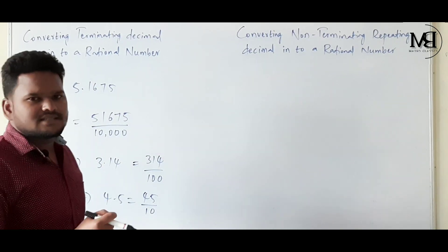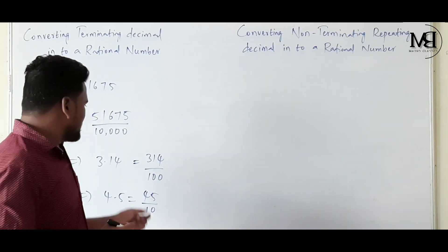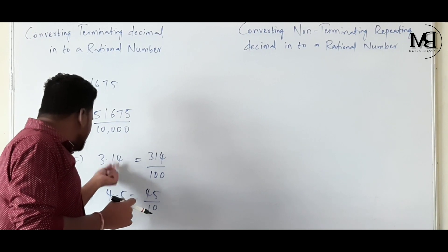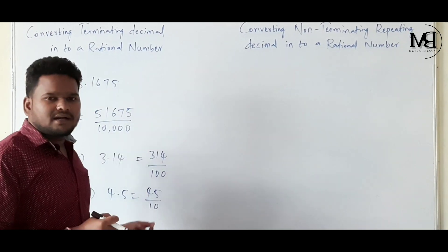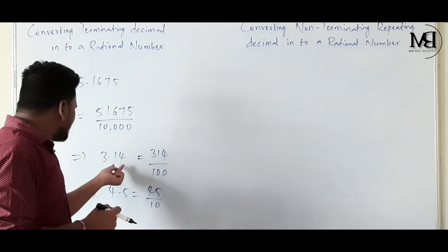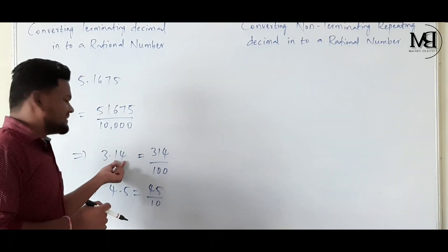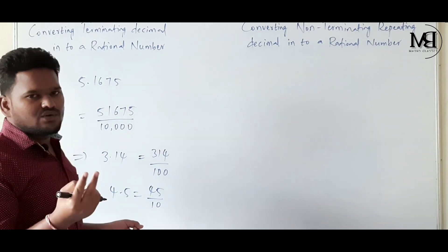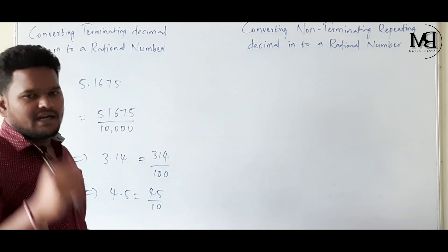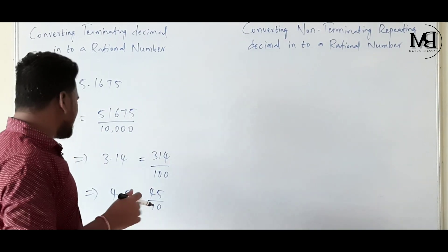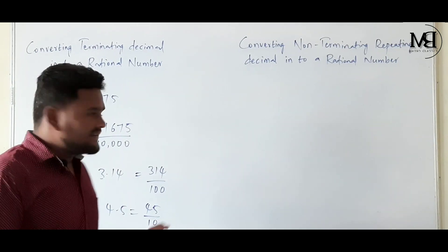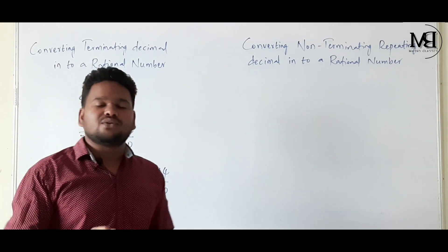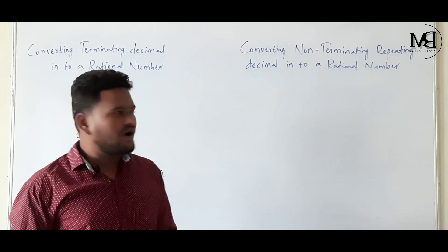Simply, we just have to see the number of digits in the decimal part. Here I have 2 digits in the decimal part, so I get 2 zeros in the divisor. Converting terminating decimal into a rational number is very easy.